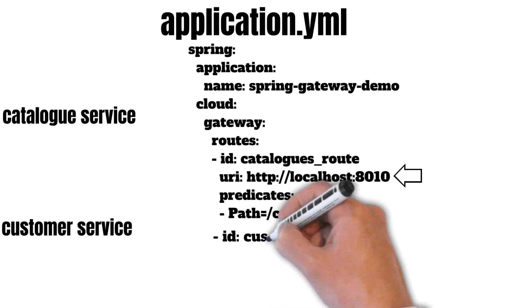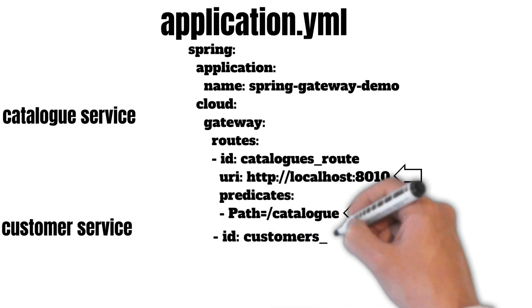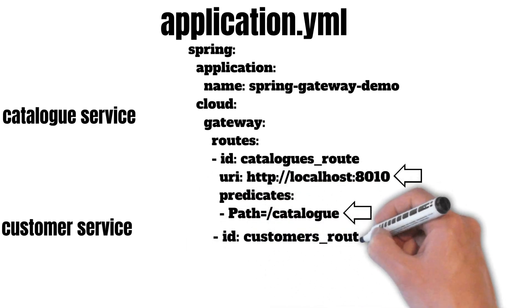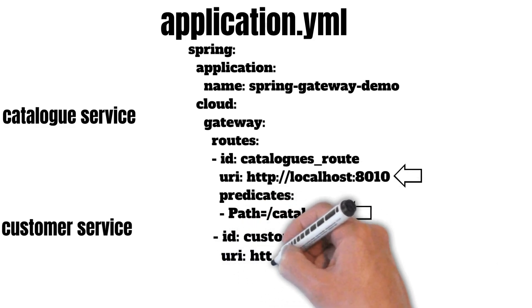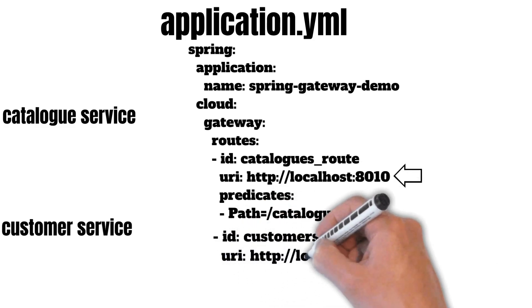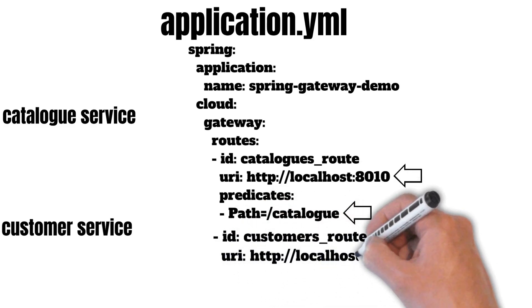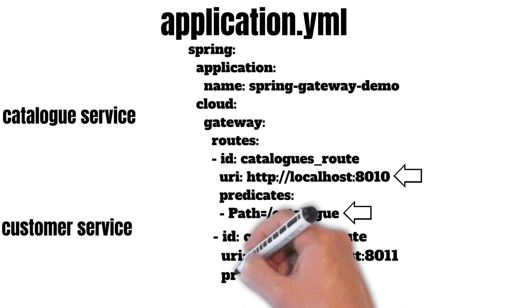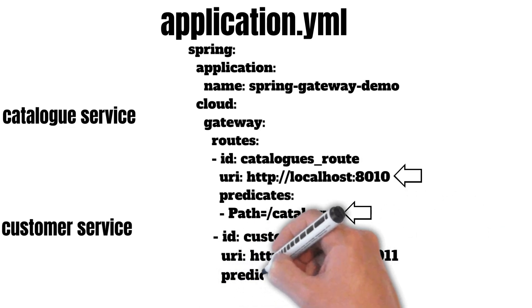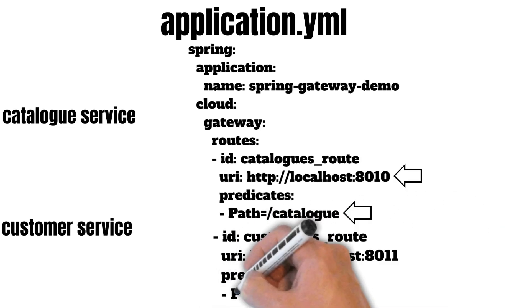Similarly, for the customer service, we will configure another route with the name 'customer_route'. Suppose it is running on localhost 8011 in its own container. We will give it a predicate path as well, which will be '/customers'.